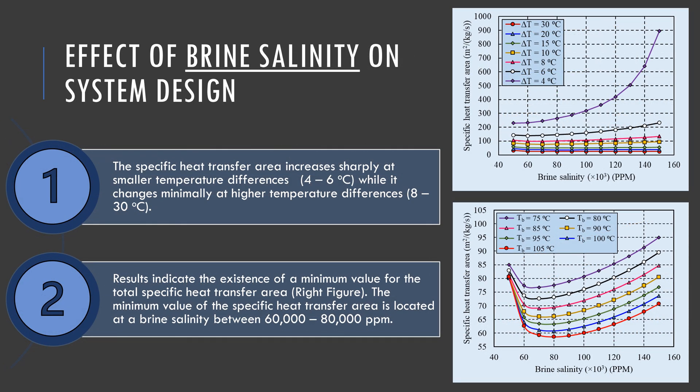Another important factor is the salinity of the discharged brine, which has a significant effect on the specific heat transfer area of the system. As brine salinity increases, the total specific area increases as well, especially for small temperature lifts between 4 to 6 degrees Celsius. Controlling the brine boiling temperature TB between 75 and 105 degrees Celsius results in a minimum value for the specific heat transfer area for every brine boiling temperature. The minimum value occurs for brine salinities between 60,000 and 80,000 ppm.